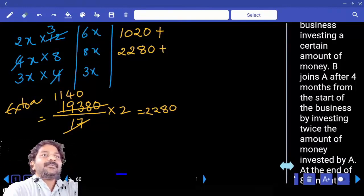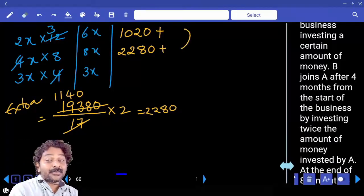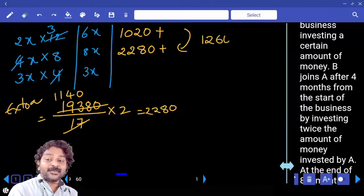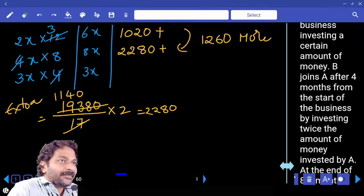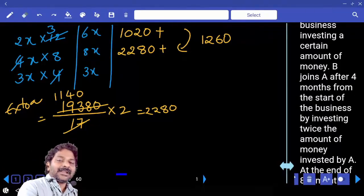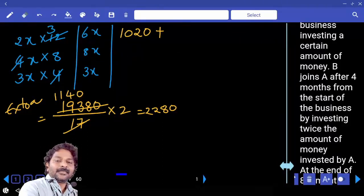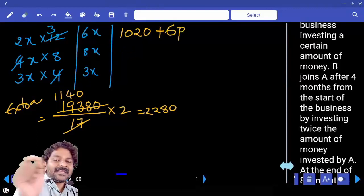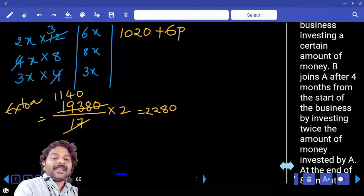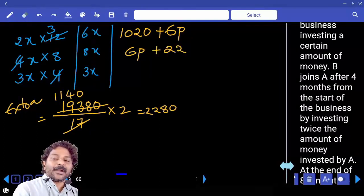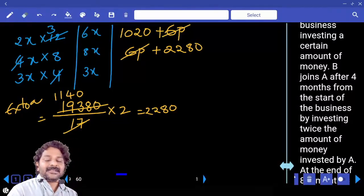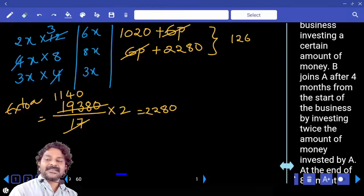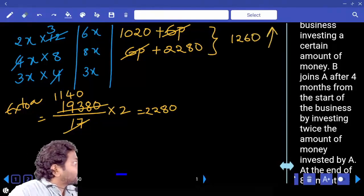Finally, who is getting more? B is getting more. And how much more? 1,260 more. A is getting this much, B is getting 6 parts plus 2 parts. 2 parts is equal to 2,280. When you take difference, 6 parts minus 6 parts gets cancelled. So difference is 1,260 more.